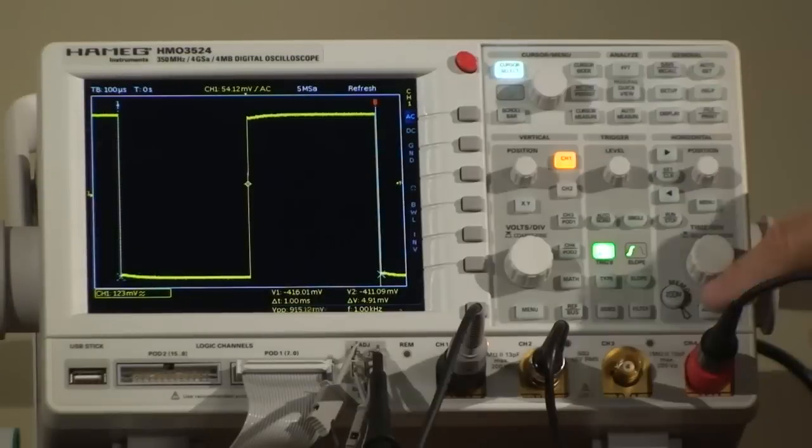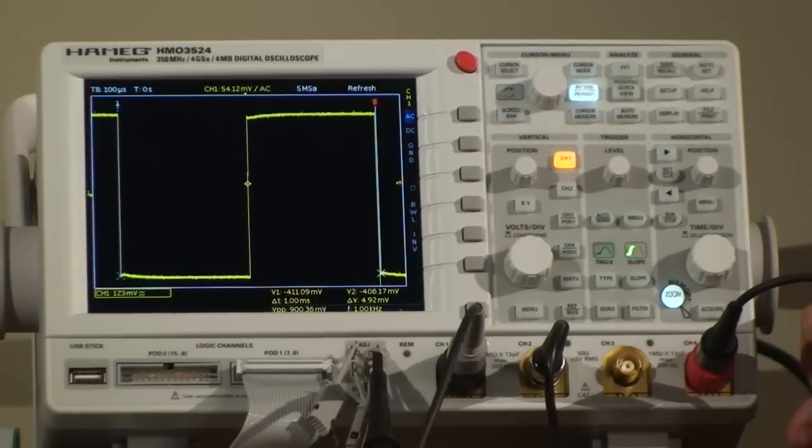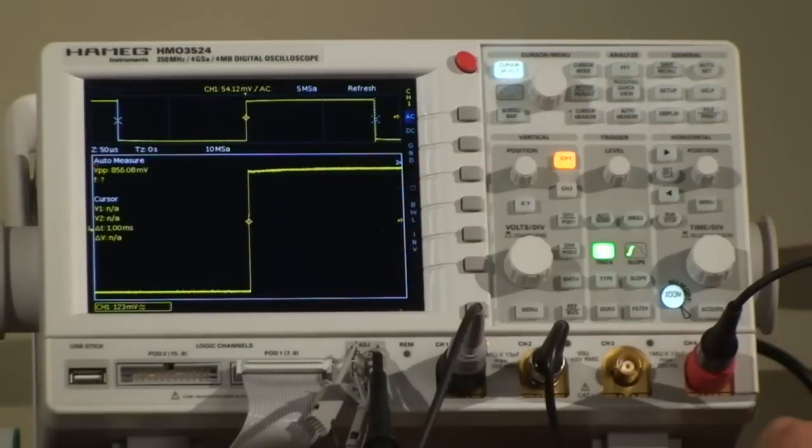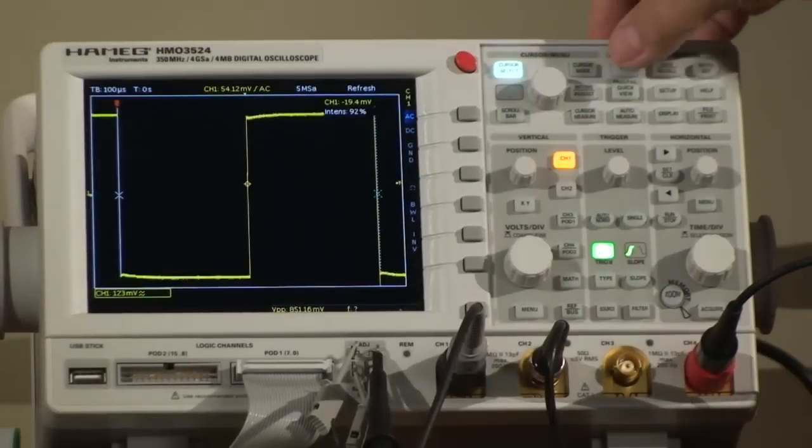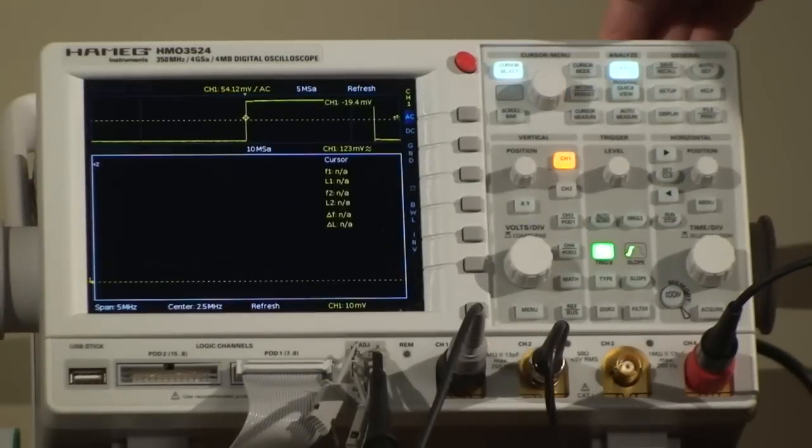If you want to see the zoom function, it's down here. So now the signal is zoomed. Switch that off again, and we also have an FFT.